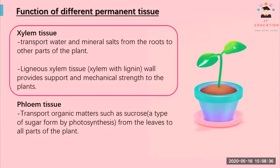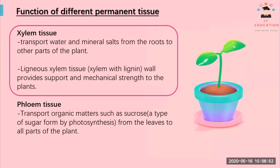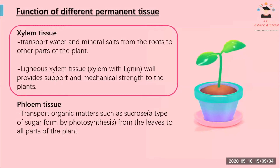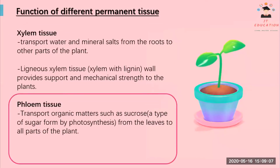Vascular tissue is a combination of xylem and phloem. Xylem transports water and mineral salts from the roots to other parts of the plant. Ligninous xylem tissue means the xylem contains lignin — a component that strengthens the xylem tissue, giving extra mechanical strength to the plant. Phloem transports organic material like sucrose, a type of sugar from photosynthesis, from the leaves to all parts of the plant.